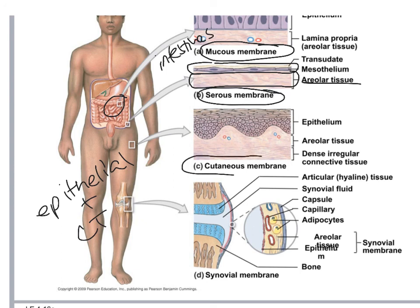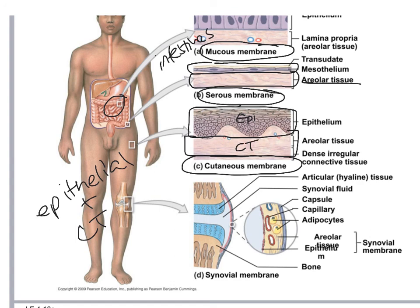The next type is the cutaneous membrane, which we'll go into in depth in Chapter 5 on the integumentary system. It has a layer of stratified squamous cells as the epithelium, and then a layer of connective tissue beneath. That's your skin. Finally, the synovial membrane surrounds your joints and produces synovial fluid. For the exam, you just need to know where each membrane is located.